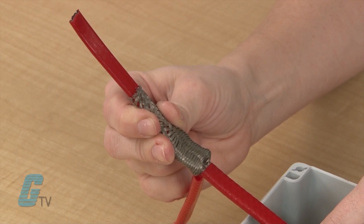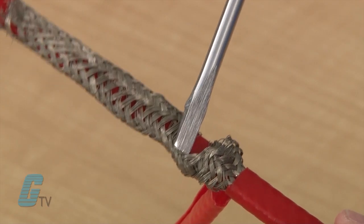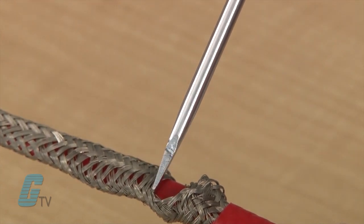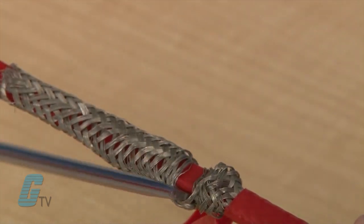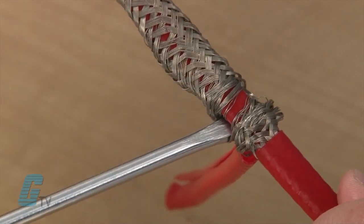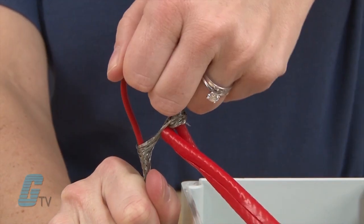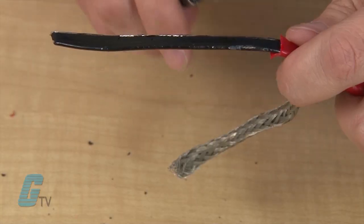At the bulge, I will separate the braid to make an opening. As I bend the heater cable, I am able to work the heater cable through the bulge away from the braided wire.